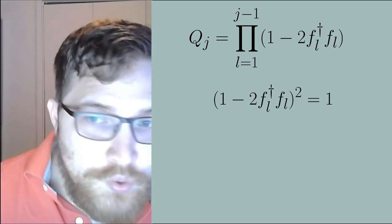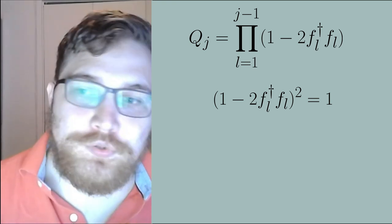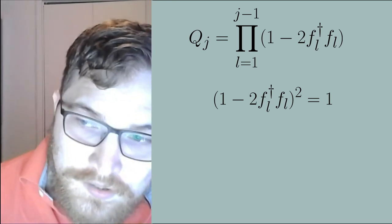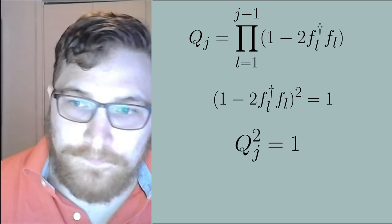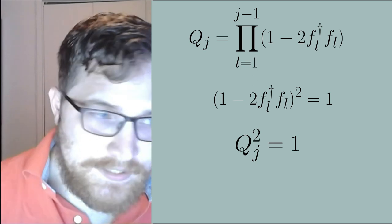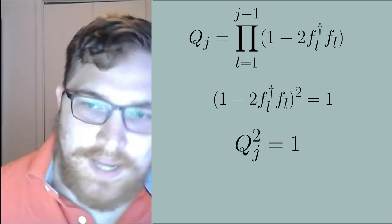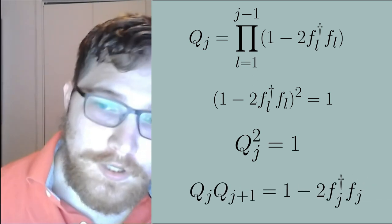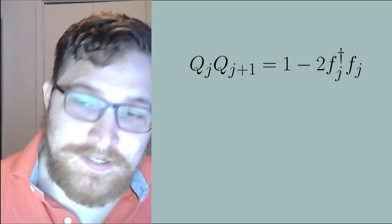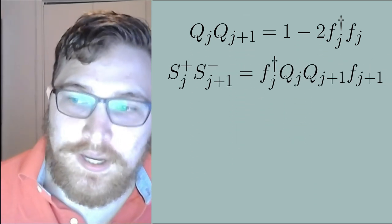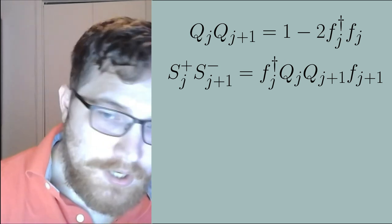This then leads us to two important conclusions that will be useful to us in the future. First the square of the exponential expression that we've written here as qj is just one or the identity and the other is that the neighboring qs reduce to the following expression.